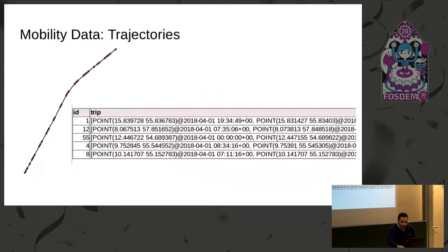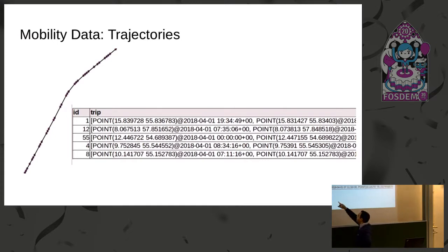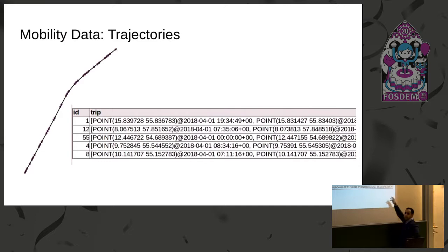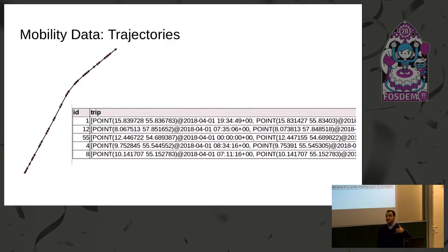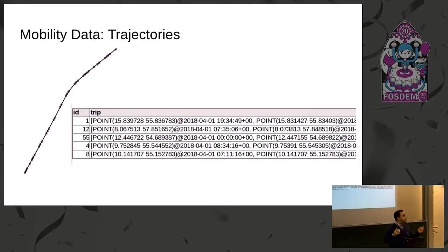What MobilityDB does is it puts the whole trip together. It encapsulates — it creates a structure for a trip where you have a point at a timestamp and then a second point at a timestamp. You put the whole sequence together in one data type, and that becomes a data element in your table. Then you can start writing functions over SQL to calculate the speed, calculate the heading, do selections, do joins, and so on.